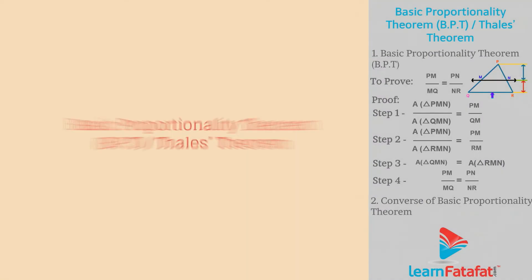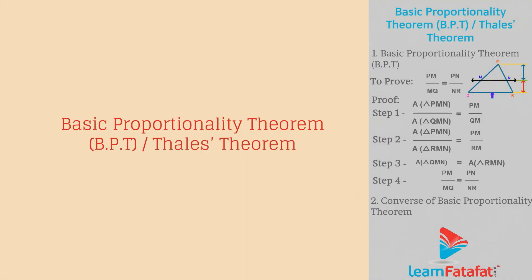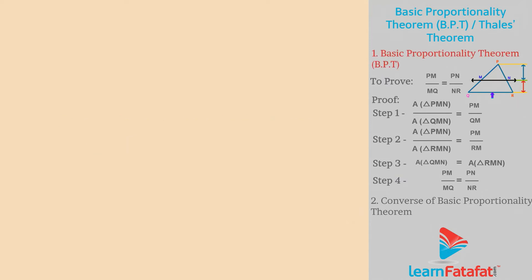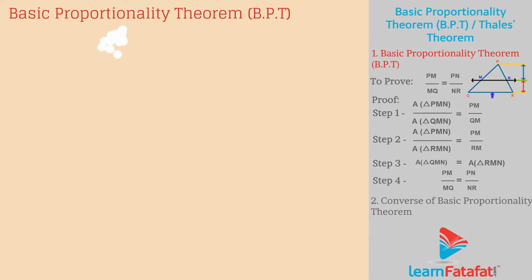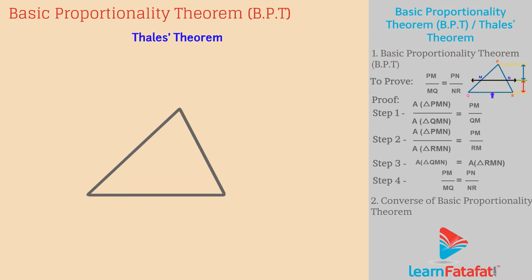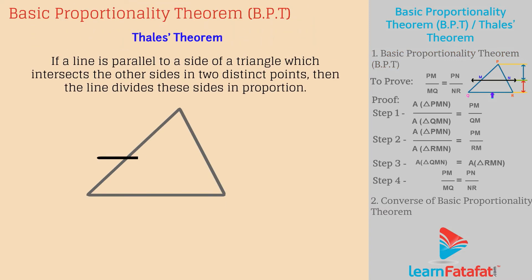Basic Proportionality Theorem, also known as Thales Theorem. A line intersecting two sides of a triangle and parallel to the third side divides the two sides in proportion.